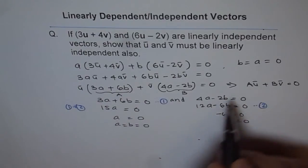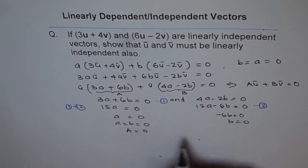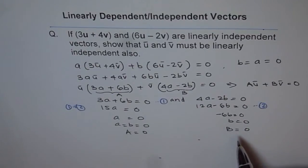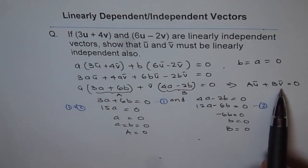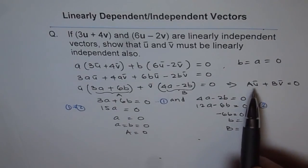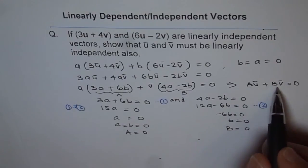That means capital A equals 0 and B is also equal to 0, both the factors are 0, since this equation is true only when capital A and capital B, that means the linear combination...